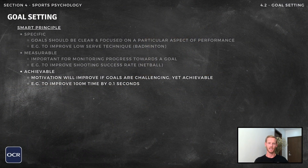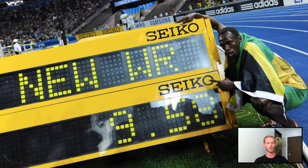Next, the A stands for achievable, which is important as motivation will improve if goals are both challenging and within your capabilities. Setting a goal that's too difficult to achieve is likely to end in failure and a loss of motivation. For example, reducing your 100 metre time by 3 seconds is not a realistic target, but improving by 0.1 seconds may well be.